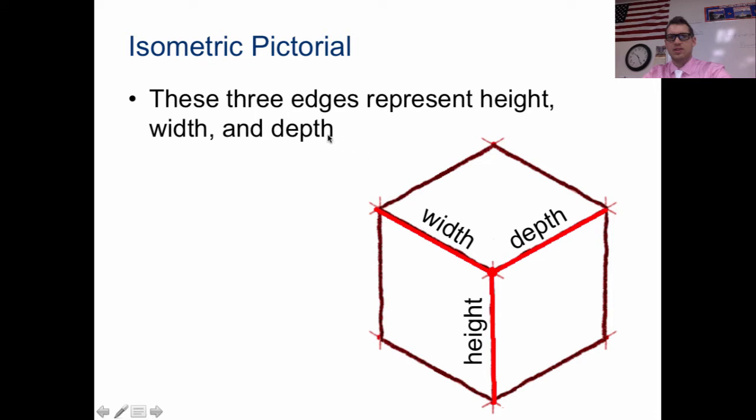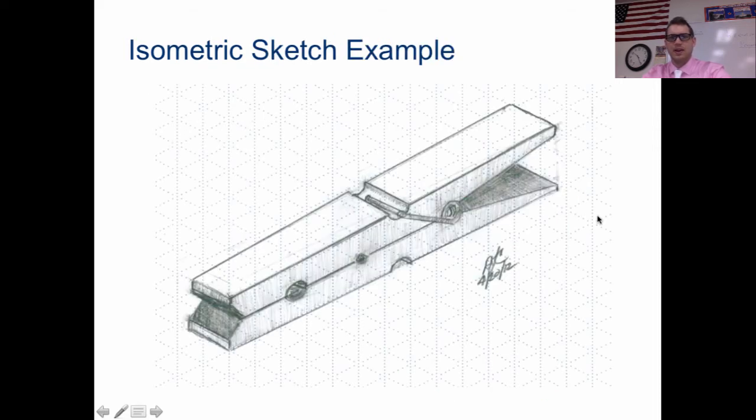Now, each isometric cube has some different measurements that I'll ask you. So this is the height, the width, and the depth. And this is a drawing. Now you may look at this drawing and go, wow, this is a good drawing. There's no way I could make this.